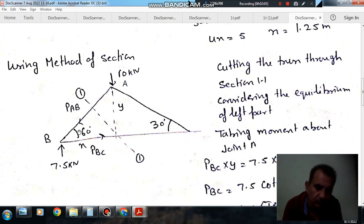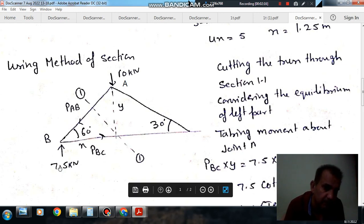And now the force acting on member AB is PAB, and force acting on member BC is PBC. And this is the normal reaction, that is 7.5, that we have calculated.